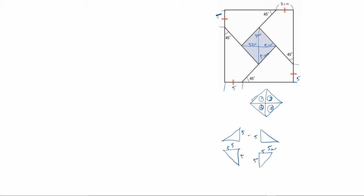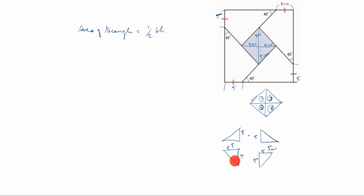So all four triangles have all sides as 5 centimeters only. What is the area of a triangle formula? Area of triangle equals one-half of B times H. In this case, you see which one is B and which one is H: this is the height, this is the breadth — this is B, this is H. The same way for the others: this is H, this is B. All are the same — 5 only.